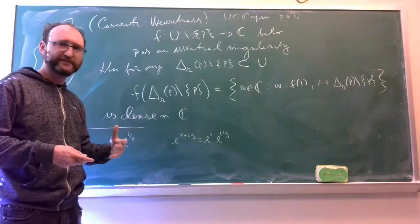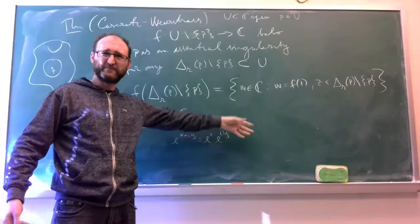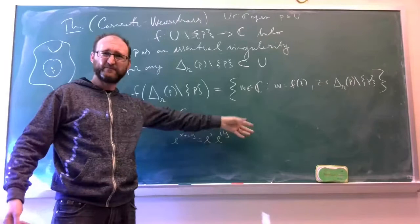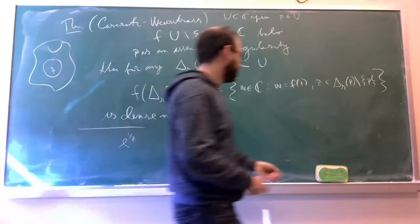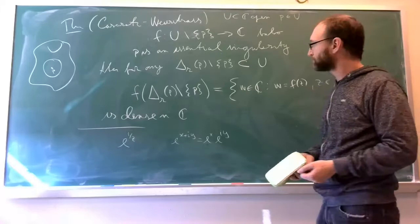I add some really large multiple of 2π over here. Can I get 0? I can get everything else. And it turns out that every essential singularity works like that.